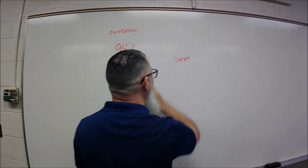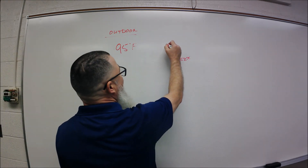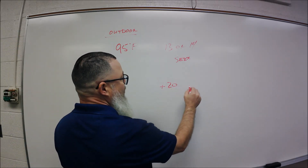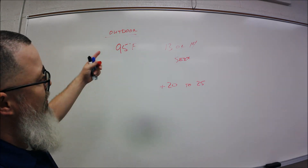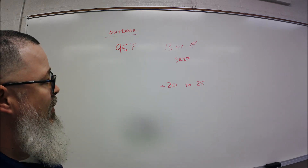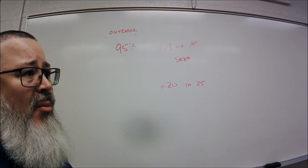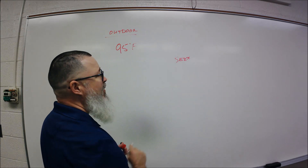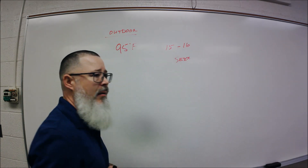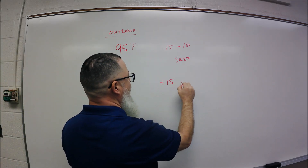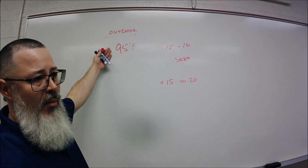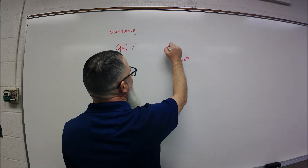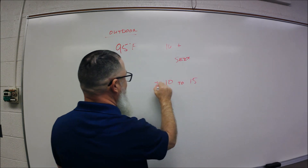That number changes as we get into other SEER ratings. For a 13 or 14 SEER unit — those typically have larger coils — I'm going to add 20 to 25 degrees, giving a condenser saturation point of somewhere between 115 and 120 degrees. For 15 or 16 SEER, I add somewhere between 15 and 20 degrees above the outdoor temperature. And if it's above 16 SEER — a fairly large unit — then I'm going to add 10 to 15 degrees above that.